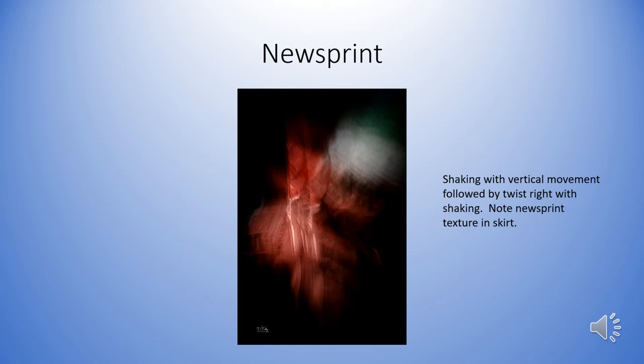Newsprint is something I have recently started to incorporate into my ICM photographs. This image, 'Dancing the Night Away,' was made by shaking during a vertical upward movement followed by a twist to the right with shaking. It looks almost like an elderly woman dancing at night with white hair — the shaking gave that fuzzy texture effect, and there's a little bit of newsprint in there as well. Right behind her arm you can see something you just can't quite make out — a banner from a page of newsprint. That ambiguity generated by the newsprint adds a whole lot to the image, and this is something I'm going to continue to explore.